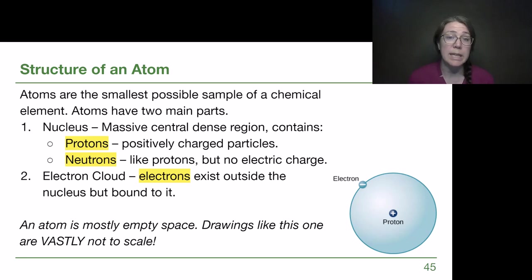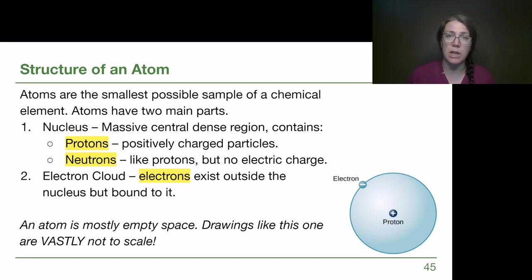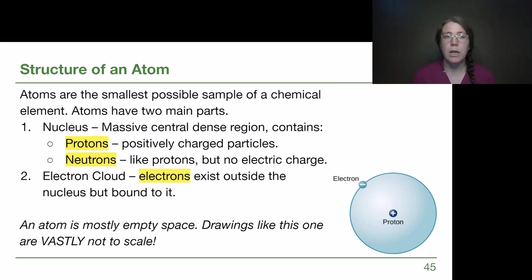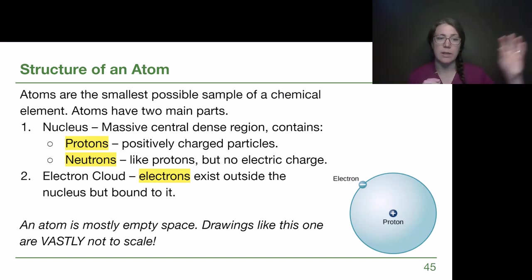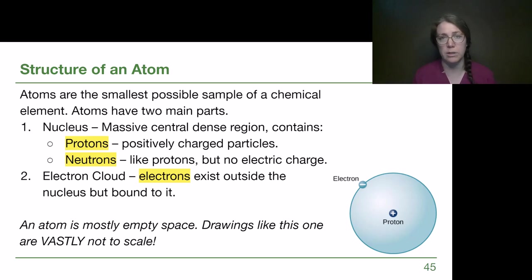An atom is the smallest possible sample of a chemical element. We've probably seen the periodic table of elements in our lives, so let's connect our understanding of atoms with that periodic table idea. An atom has a central nucleus, which is where most of the mass is found, and then an electron cloud surrounding it where we would find electrons. The distance between the nucleus and the electron cloud is extremely vast — an atom is mostly empty space.